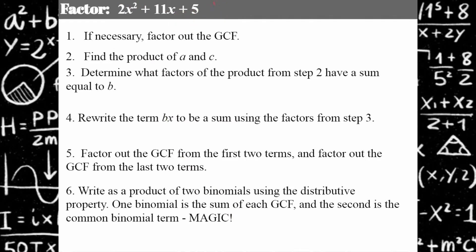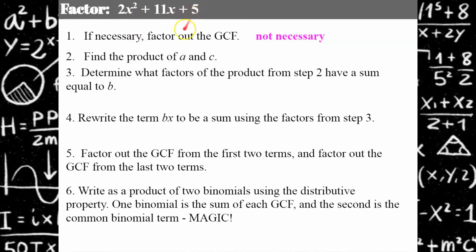Here's an example: I'm going to factor 2x squared plus 11x plus 5 using these six steps. Step one is not necessary — 2x squared, 11x, and 5 do not have any factor in common. Step two: find the product of A and C. A is 2, C is positive 5 — you have to keep track of the signs. So 2 times 5 is 10.